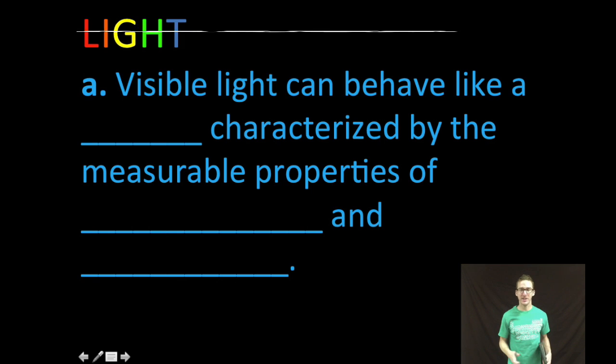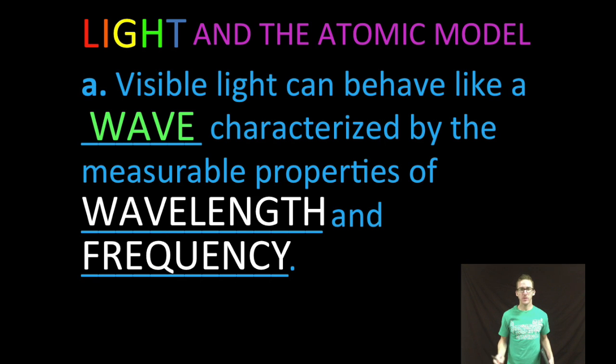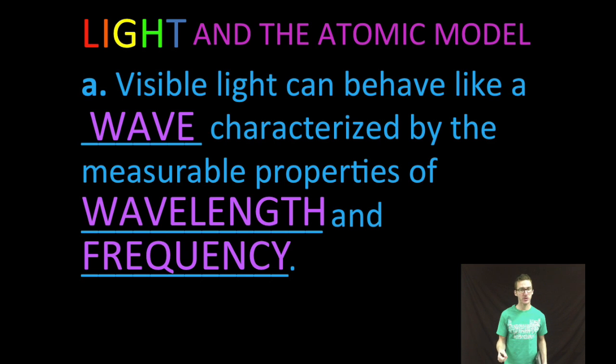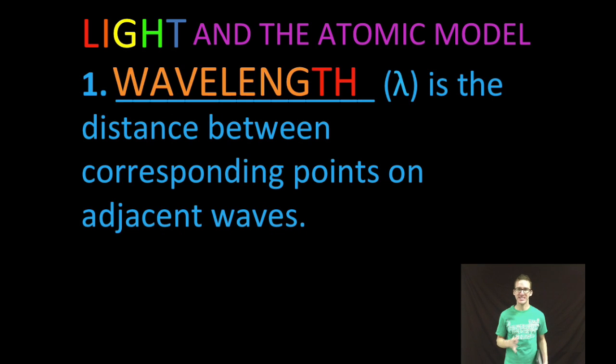Now, as I mentioned, light and all forms of electromagnetic radiation can act like both a wave and a stream of particles. We're first going to talk about some of the wave-like properties that visible light possesses. Some of the most important and measurable properties of visible light behaving like a wave is wavelength and frequency. Now, wavelength is just the distance between corresponding points on adjacent waves. Notice we use the Greek letter lambda to represent wavelength.